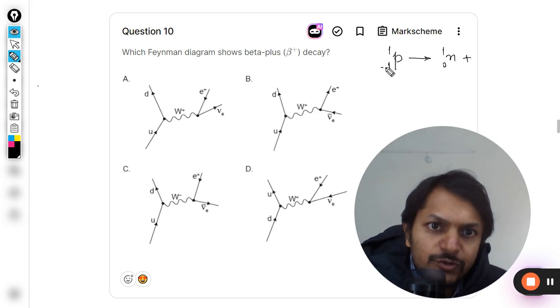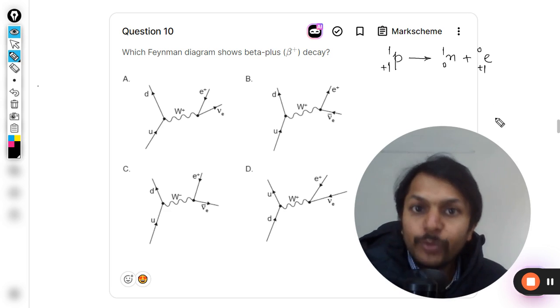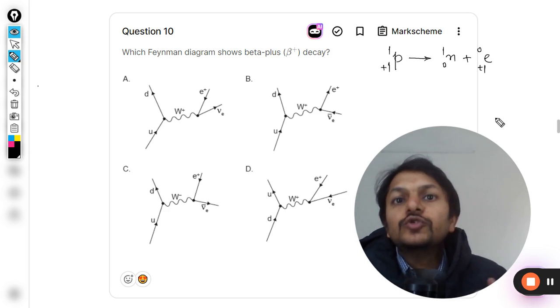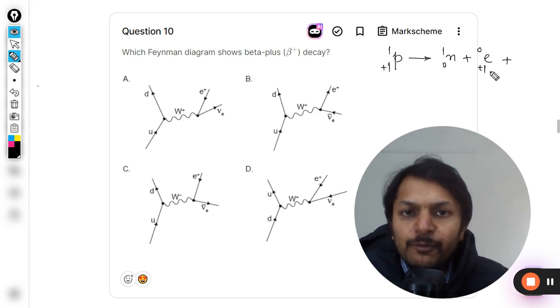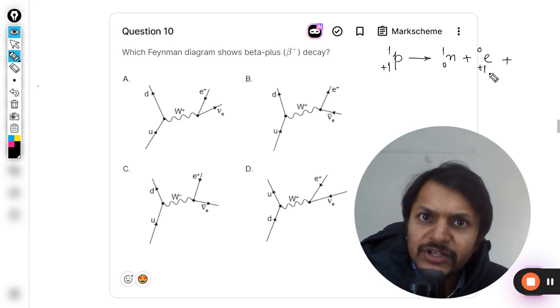Charge has to be conserved. This is plus one, this is zero, so a positive electron is created which is called a positron, also known as a beta positive particle. Because this is having a lepton number of minus one, it is an anti-particle of the electron.